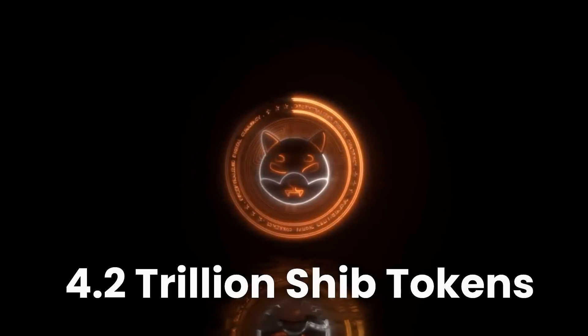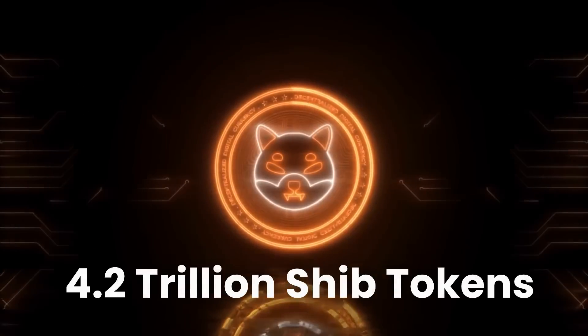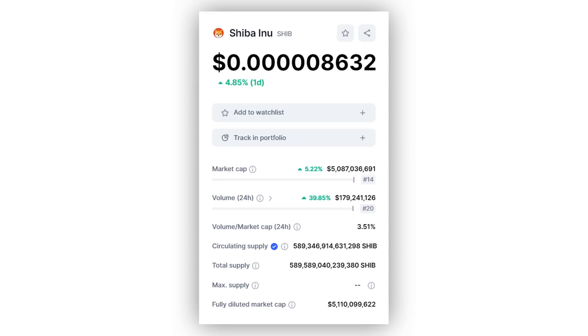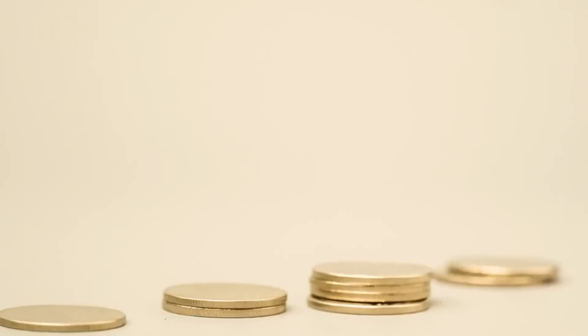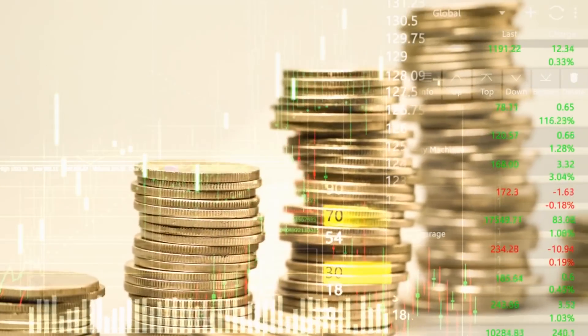Getting right into the mystery, three different SHIB addresses recently received a whopping 4.2 trillion SHIB tokens. Now, huge transactions are not exactly unusual in the Shiba Inu market, especially considering that the token is quite inexpensive. However, even at that, 4.2 trillion tokens is still quite a lot.